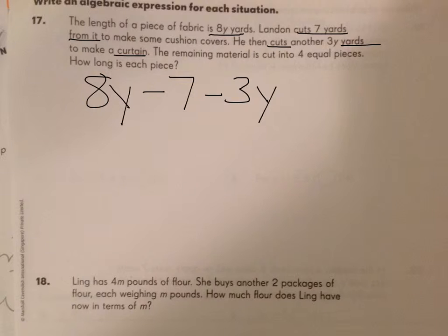He's got cushions and curtains. Starts with 8Y, takes away 7, and then cuts another 3Y for his curtain. The remaining material is cut into four equal pieces. When I see cut into four equal pieces, I know that's division.